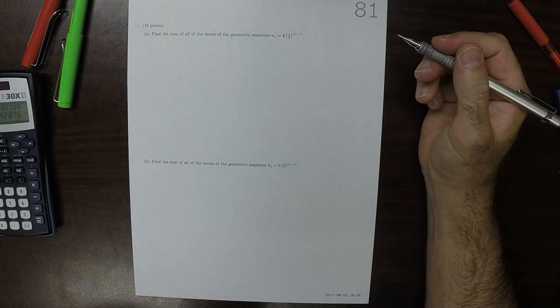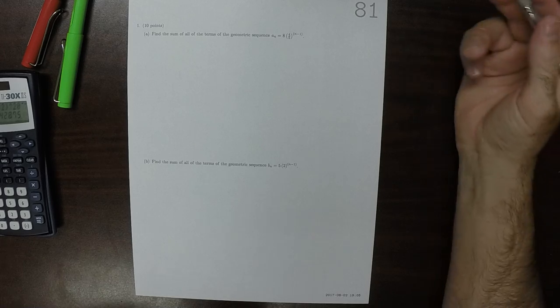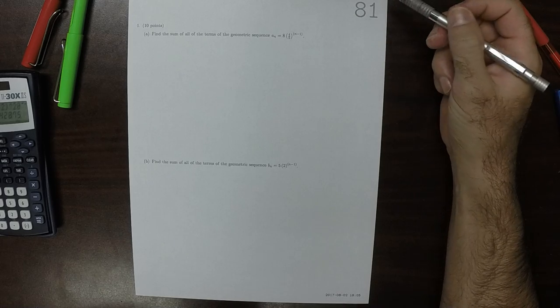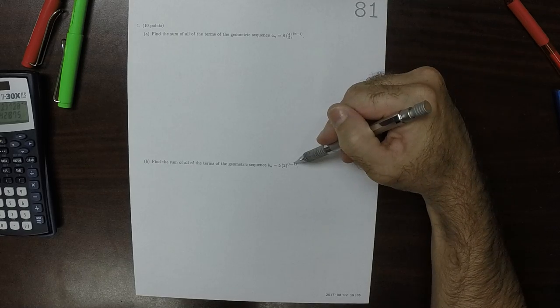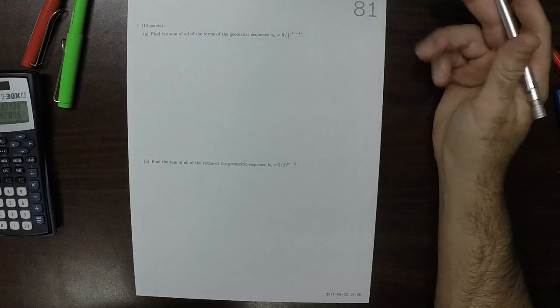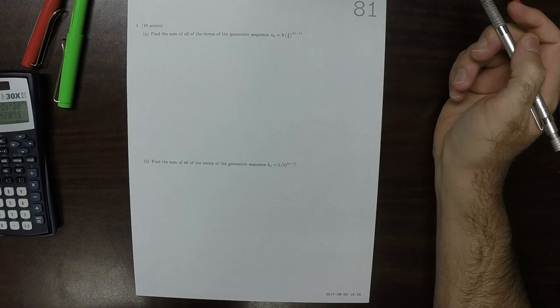This is the solution to written homework 81. So notably, what you were supposed to observe is that these two sequences are the same geometric sequences that were on written homework 80.